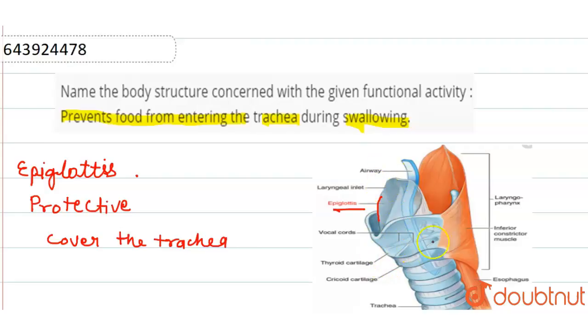When the windpipe is open, the trachea is covered by the epiglottis, and it is made up of elastic cartilage tissue.